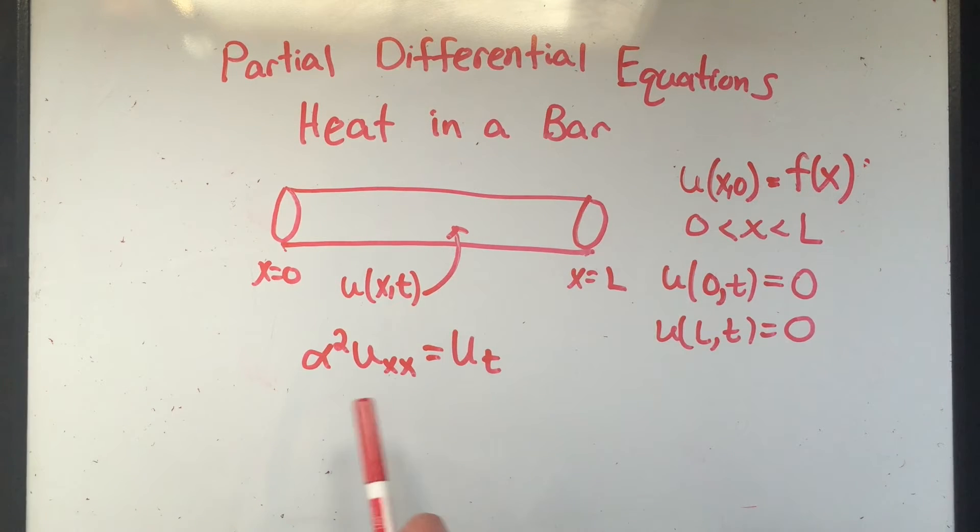And these might look familiar if you saw my last video. So I still need to talk about this. What is uxx and ut? Well, this means the second partial derivative in respect to X, or I'm taking the derivative in respect to X and then again, and that's got to equal my function in respect to T one time.